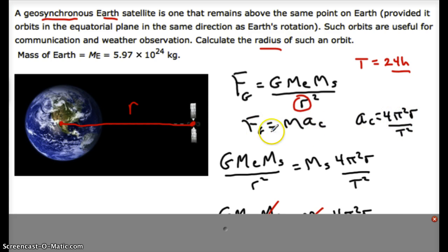Using F equals ma and setting the gravitational force between the Earth and the satellite equal to the mass of the satellite times its centripetal acceleration, we would come up with this expression.